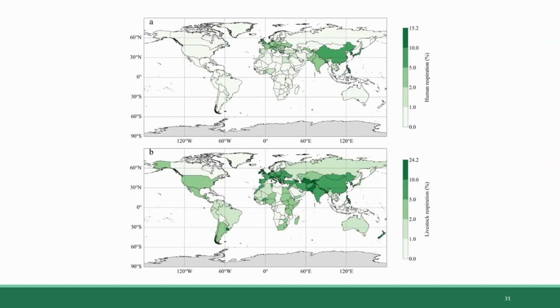These figures here show the percentages of heterotrophic carbon dioxide release contributed by humans in the top map and livestock animals on the bottom map by country. So as you can see, in a vast majority of countries, humans exhale less than one percent of the carbon dioxide and livestock animals usually exhale less than 10% of the carbon dioxide in most countries.